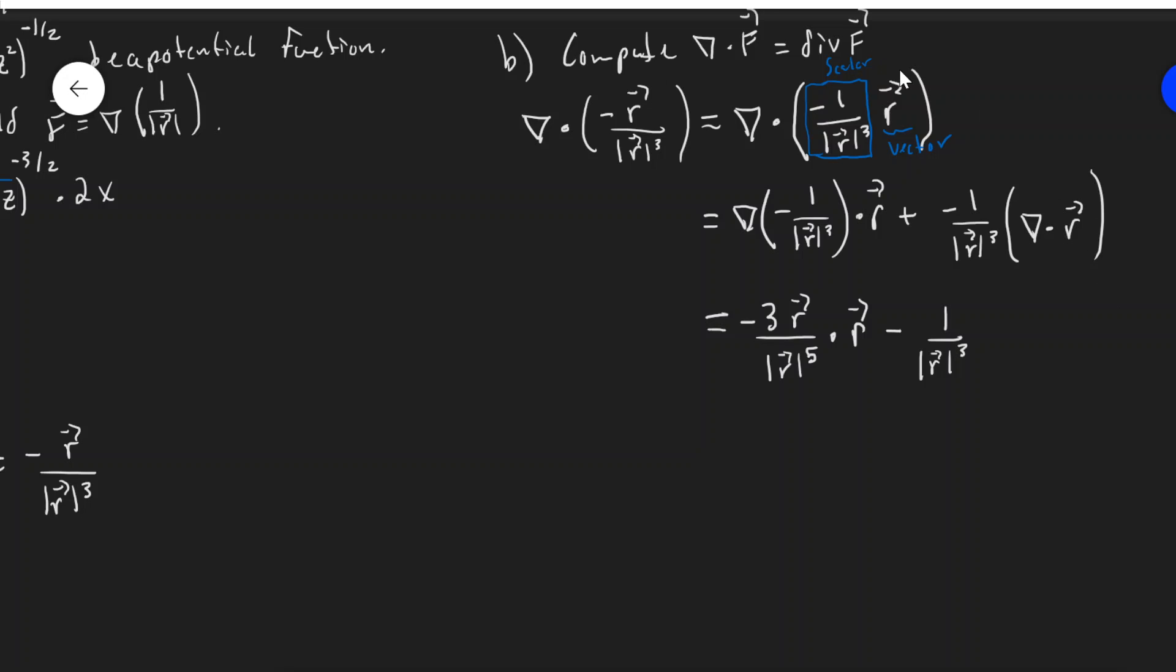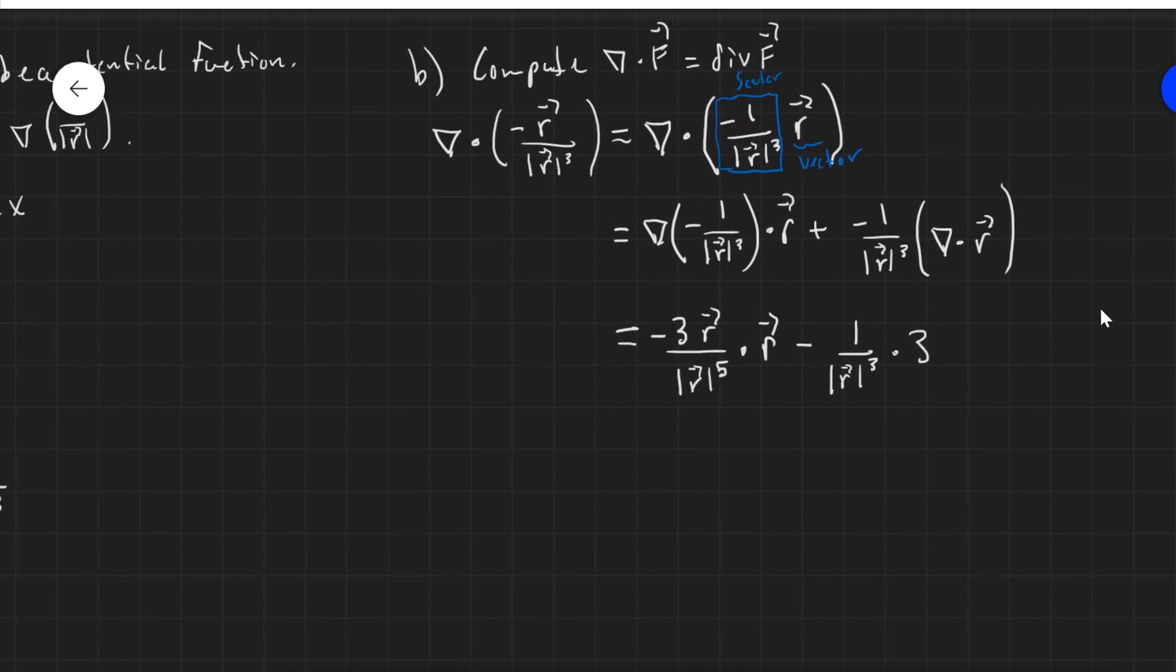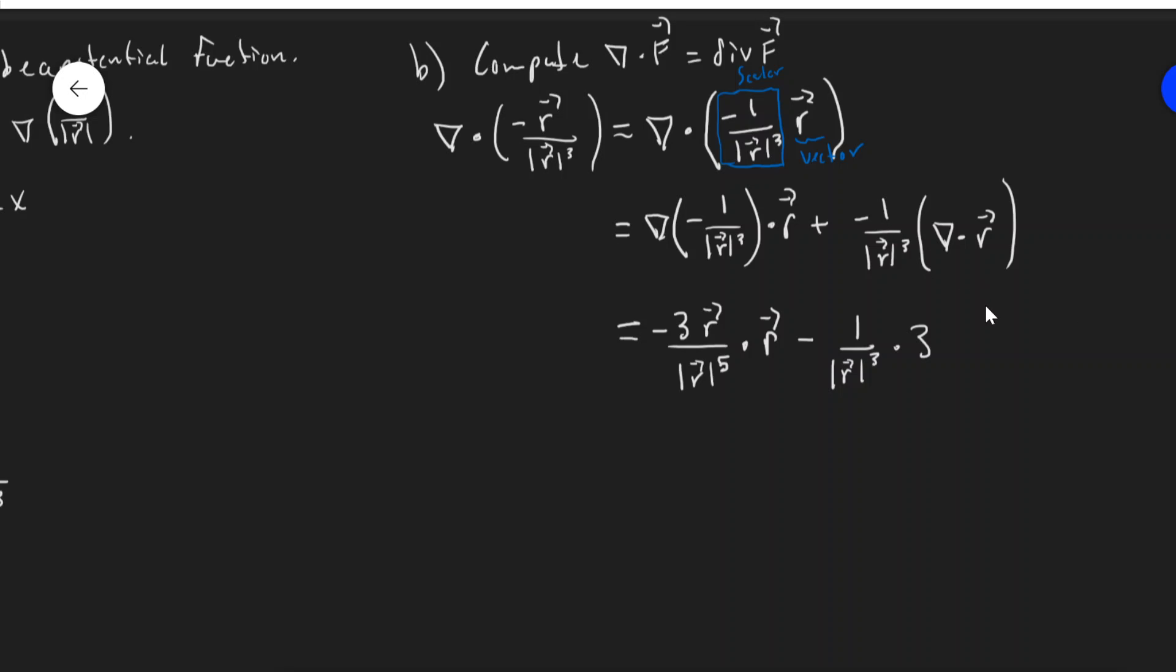So that is the divergence of just the vector x, y, z. So that'll just be three if you can do that in your head. Hopefully you can at this point. x, y, z, so partial x is one, partial with respect to y of the y component's one, partial with respect to z of the z component's one. And so add them all together, you get three.